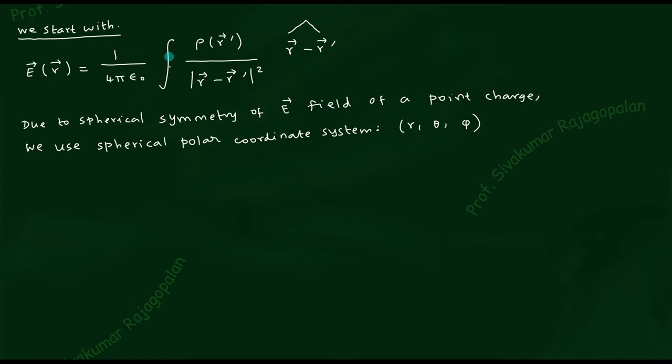Evaluating the integral: ∫₀^π sinθ dθ = [−cosθ]₀^π = −cos π + cos 0 = 1 + 1 = 2. Then ∫₀^{2π} dφ = 2π. So the right-hand side equals 2 × 2π = 4π.